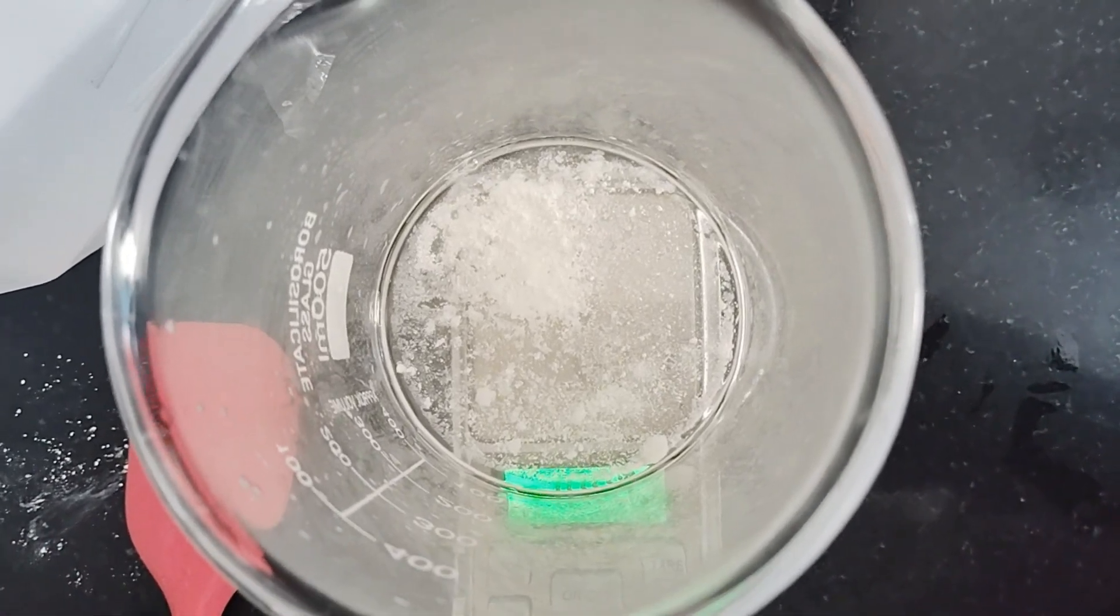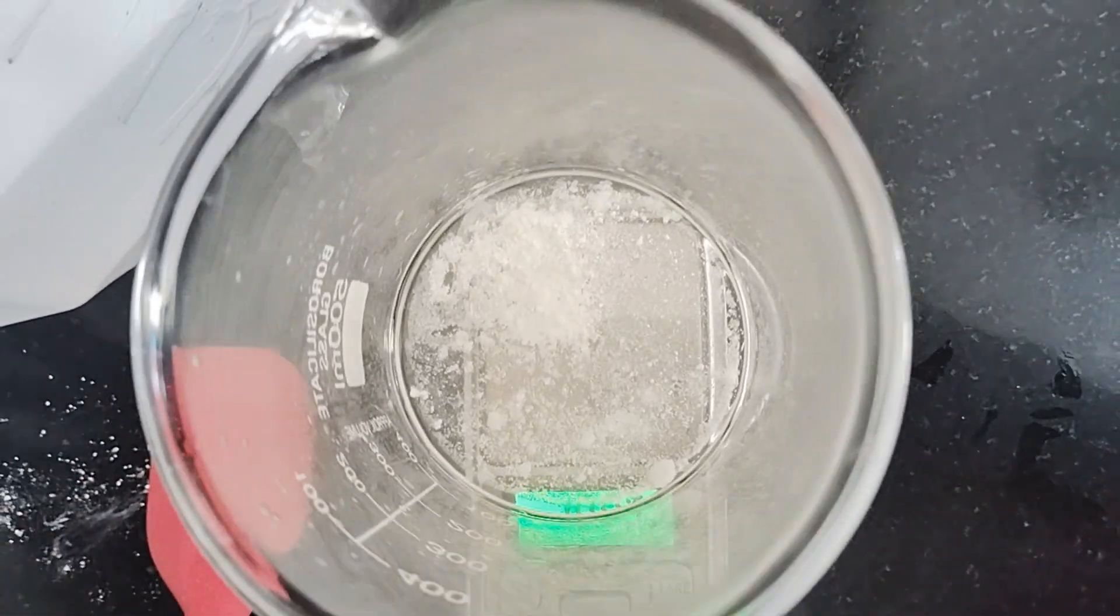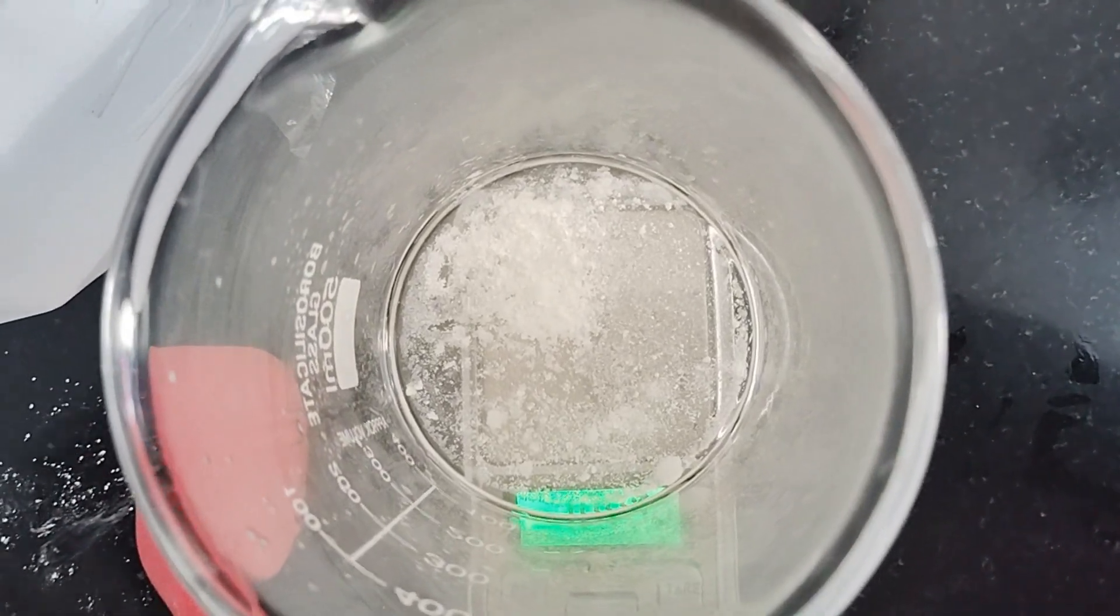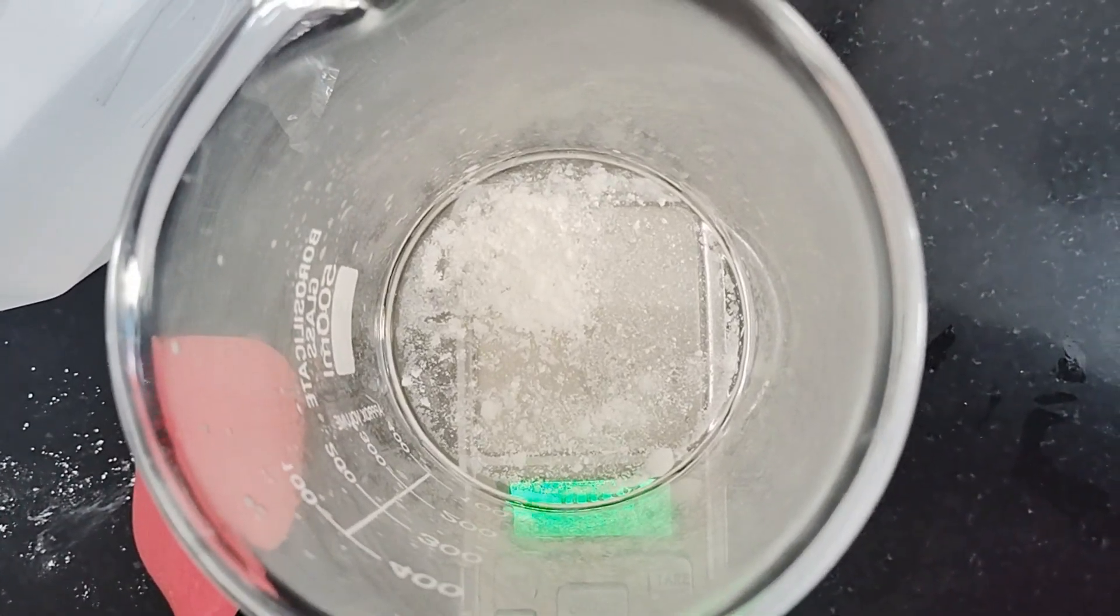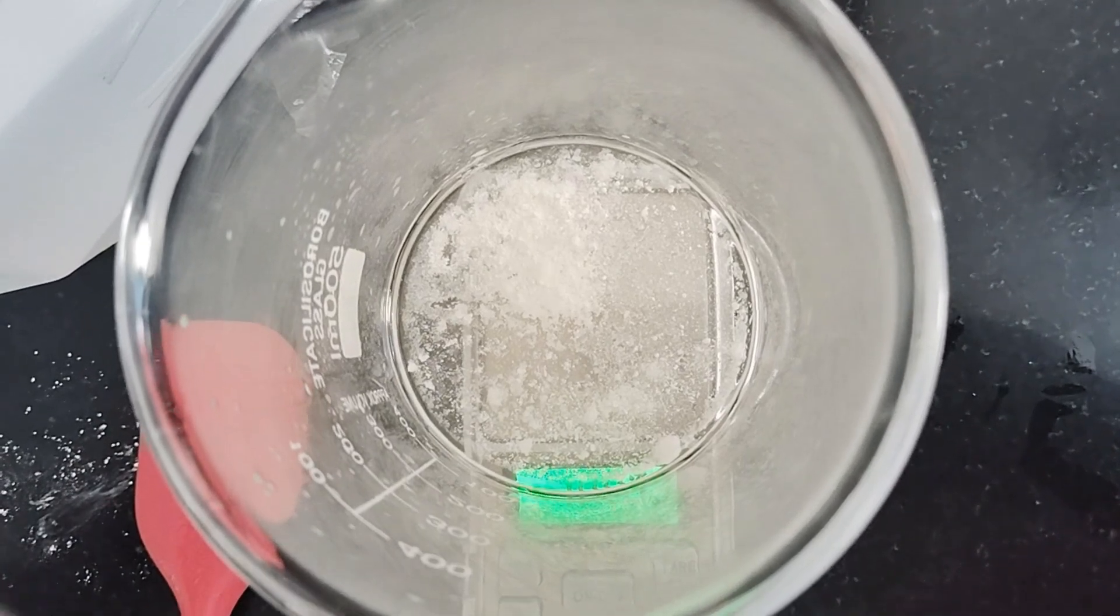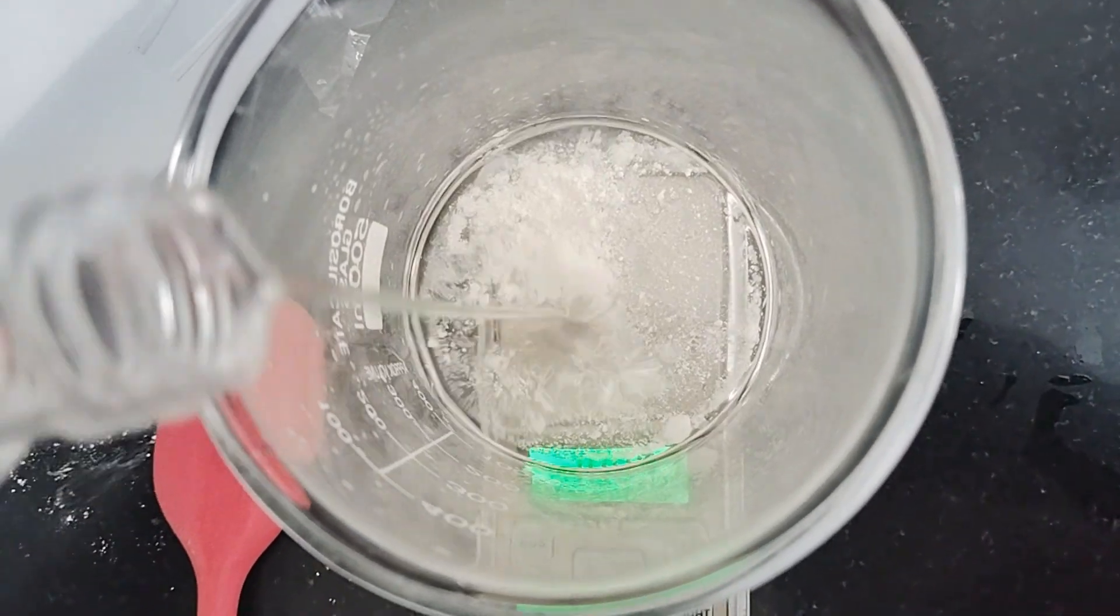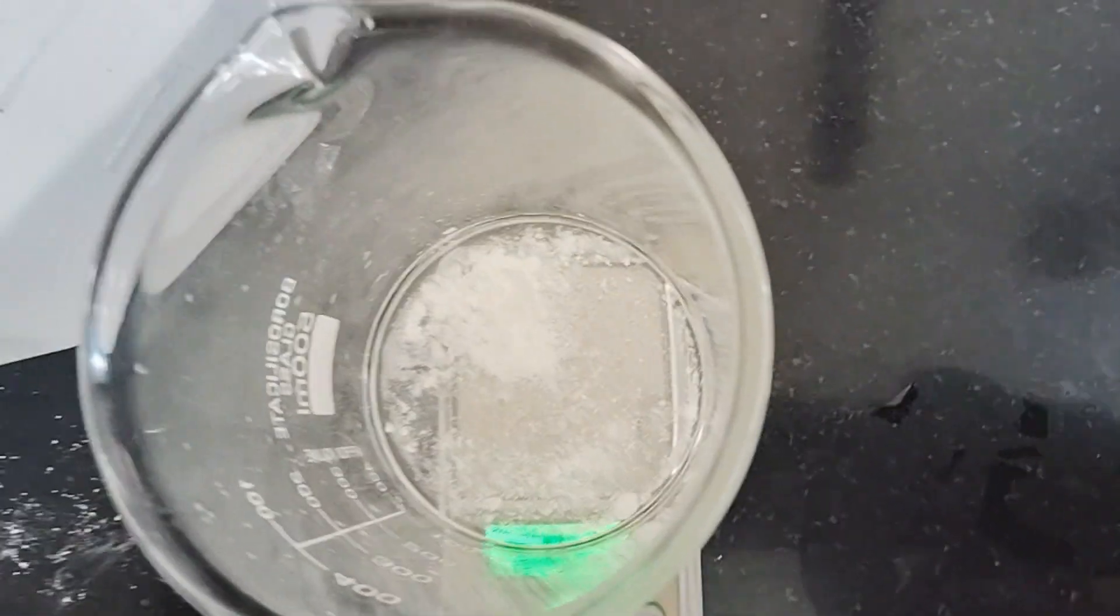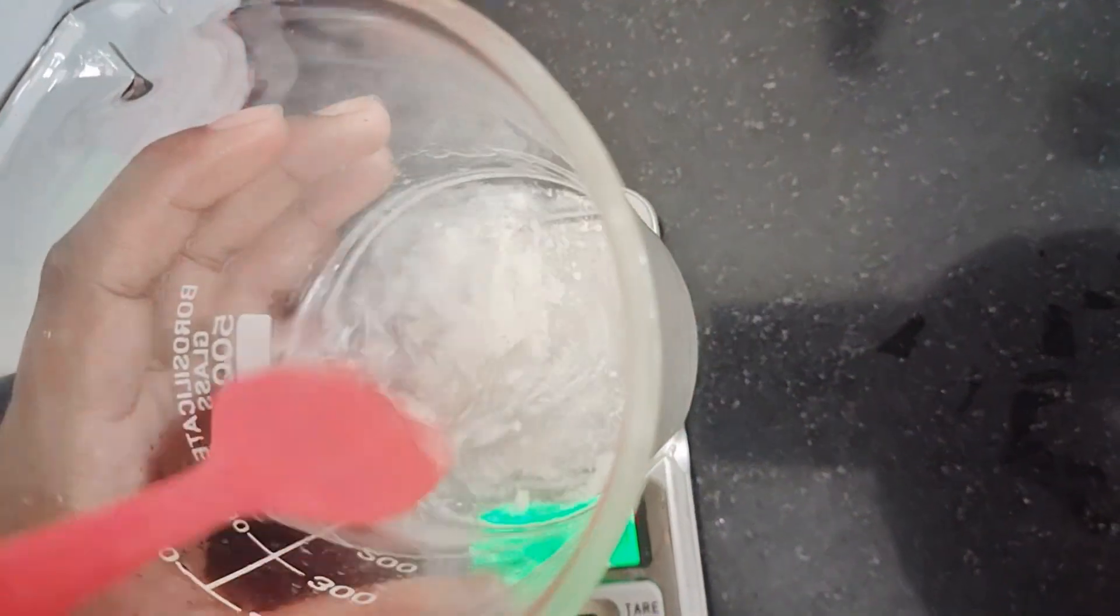It is a very easy process. All you need to do is put all the ingredients in a beaker and then mix all together. Then in a spray bottle, you have to put the formulation. Whenever you are going to use it, just shake the bottle a little bit and then use it on your skin.